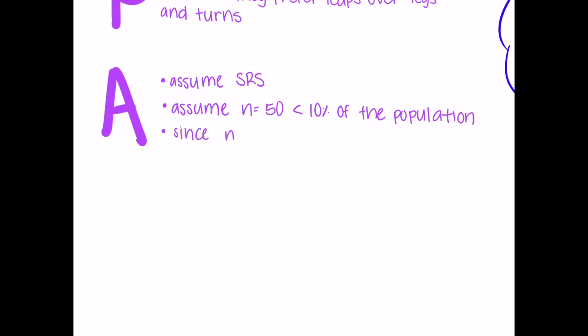Lastly, since n times P hat, which equals 23, and n times 1 minus P hat, which equals 27, are both greater than 10, we assume that the sample is large enough for a normal sampling distribution.